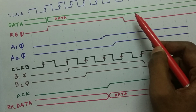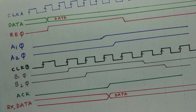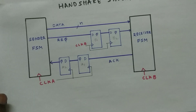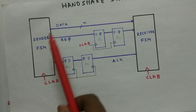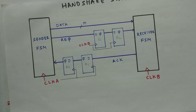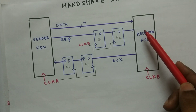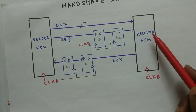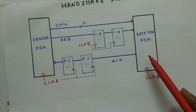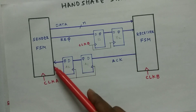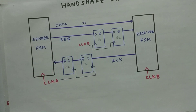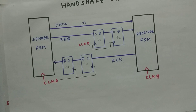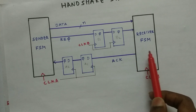Let me summarize the handshake synchronizer. We have two clock domains — clock A and clock B. The sender sends data along with a request signal. The request is synchronized, and when received by the receiver FSM, it takes in the data and sends back an ACK. The sender can only change the data after the ACK is acknowledged. Data must remain stable throughout the synchronization scheme until the acknowledgement signal is received.